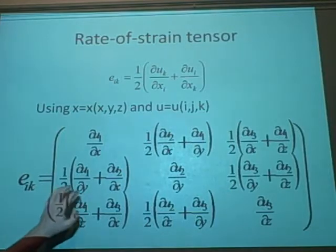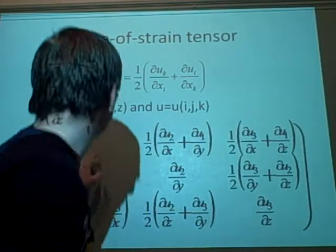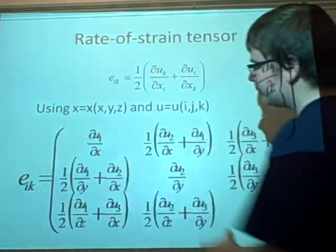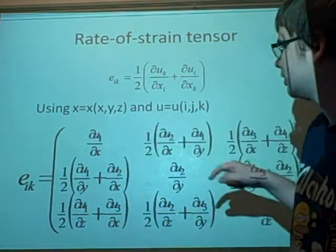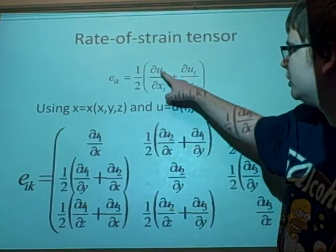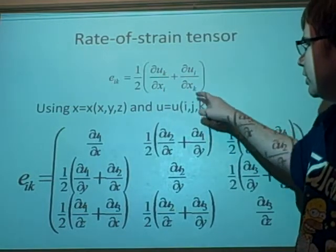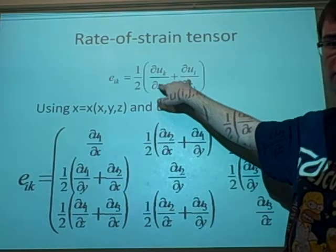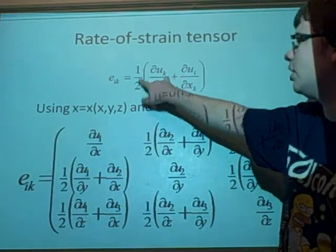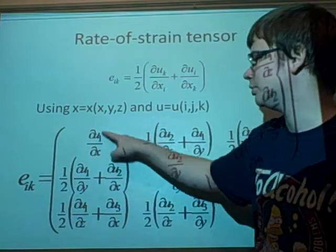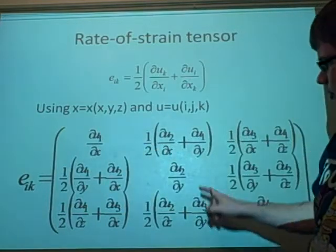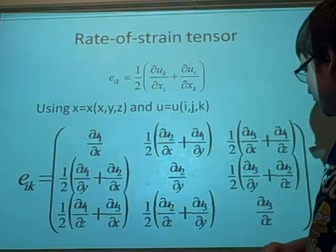So what we've done first is we've taken the value 1, 1, because this is our first spot. And so we put that into here. It would be du1 over dx1 plus du1 over dx1. So that would be 2 du1 over dx1, and we're halving it. So we're just left with du1 over dx1. And that's going to work the same in the diagonals.